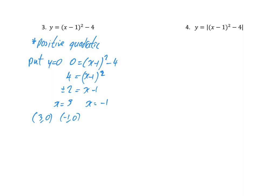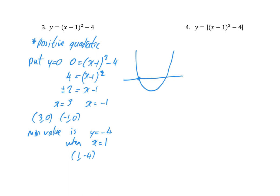The minimum value of this curve is also important. The minimum happens when the bracket x minus 1 is equal to 0 — this comes from completing the square. So the minimum value is y equals minus 4, and that happens when x equals 1. So I'll draw this U-shaped graph crossing at minus 1 and 3, with a minimum value at the point (1, minus 4).